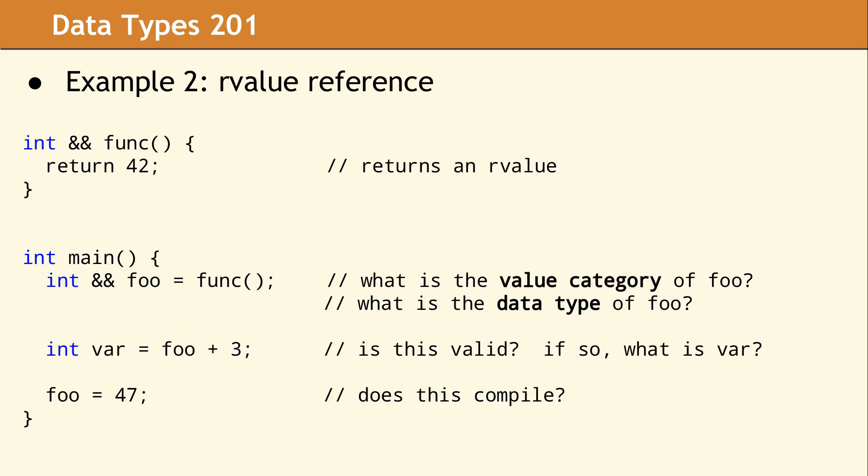In this example, we're showing a somewhat unusual usage of R value references, but one that's very useful to understand. First, we have a function named func. Its return type is R value reference to int. This means that this function may return an R value. 42 is an integer literal, so its data type is int, and its value category is R value. Now, in main, when we call func, since it returns an R value reference, the call to func has the value category R value. This R value can be bound to foo.